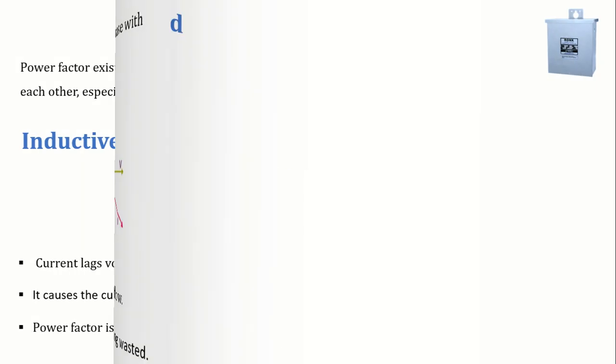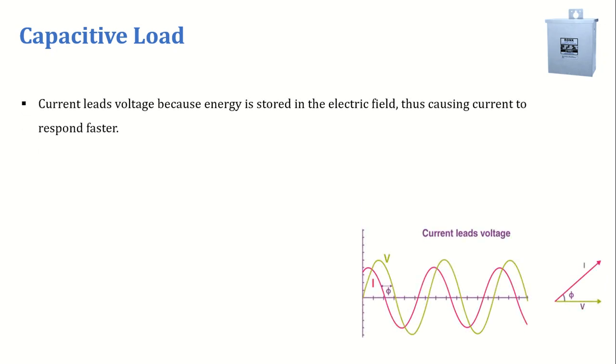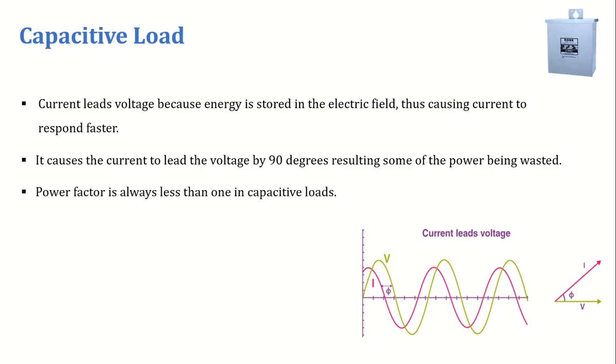On the other hand, in capacitive loads like capacitors, current leads voltage because energy is stored in the electric field, causing current to respond faster. It causes the current to lead the voltage by 90 degrees. The same way, power is wasted here and power factor value is less than 1.